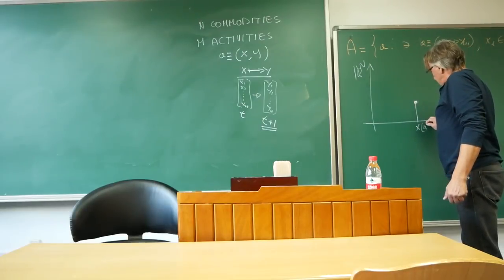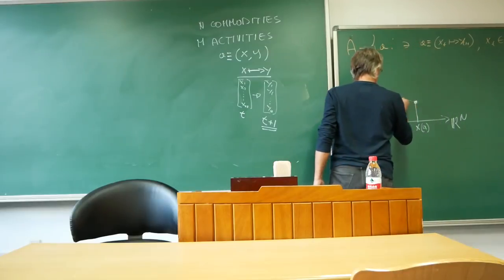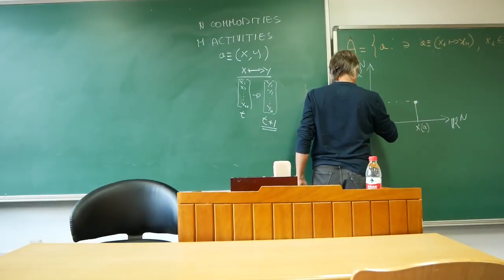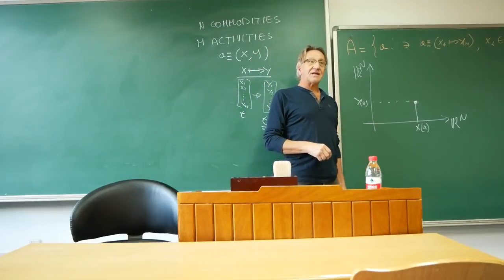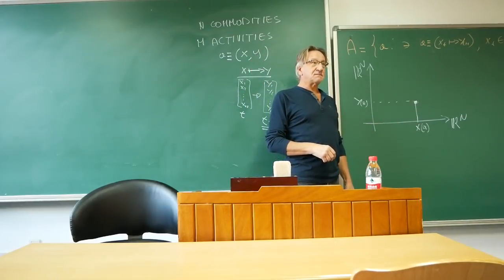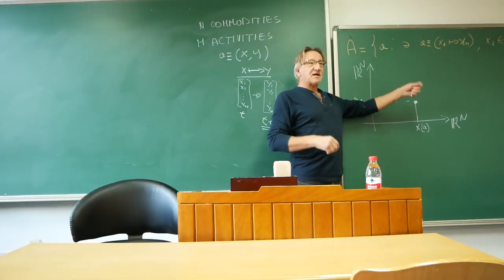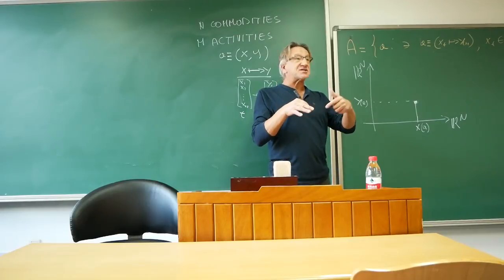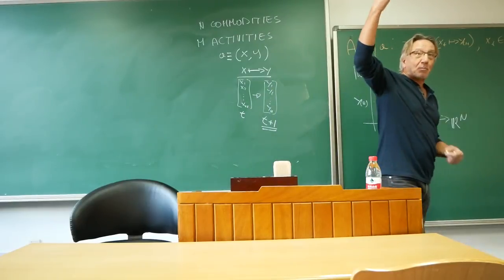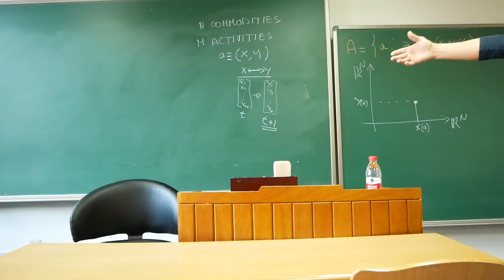X, let's call it X of A, and Y of A. These are both n-dimensional vectors, and the point is that in 2n, many coordinates are zero, so the actual positive entry may be 6 on one side and 3 on the other, right? But that's what it is.